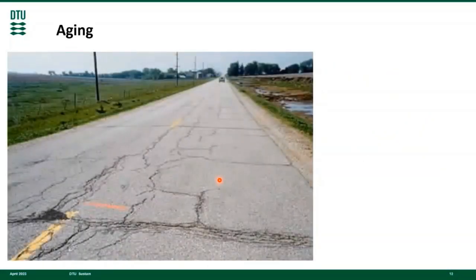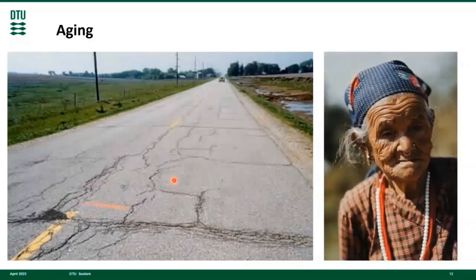Asphalt pavements age. Over the years, they turn grey, become deformed, more brittle, and display signs of fatigue and scars from past damages and repair attempts. Humans age similarly. Over the years, they turn grey, become deformed, more brittle, and display signs of fatigue and scars from past illnesses and repair attempts.